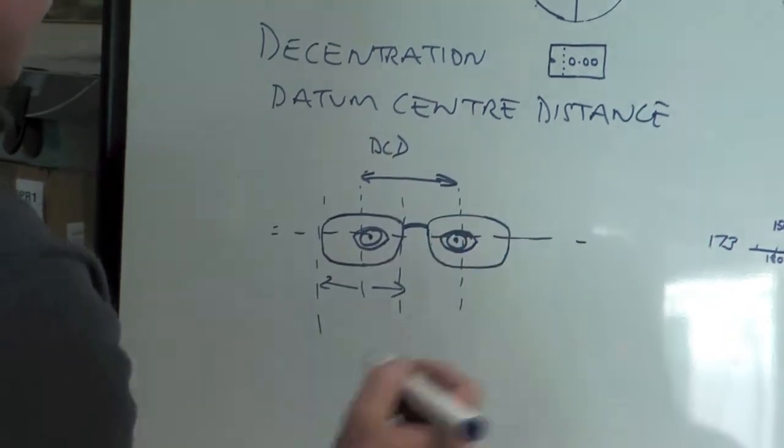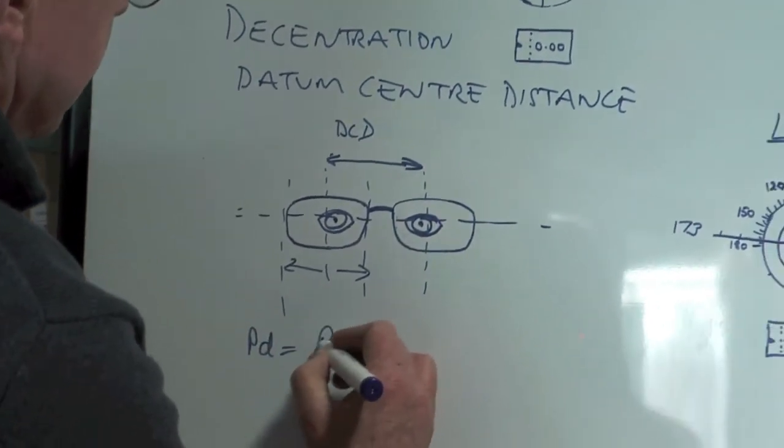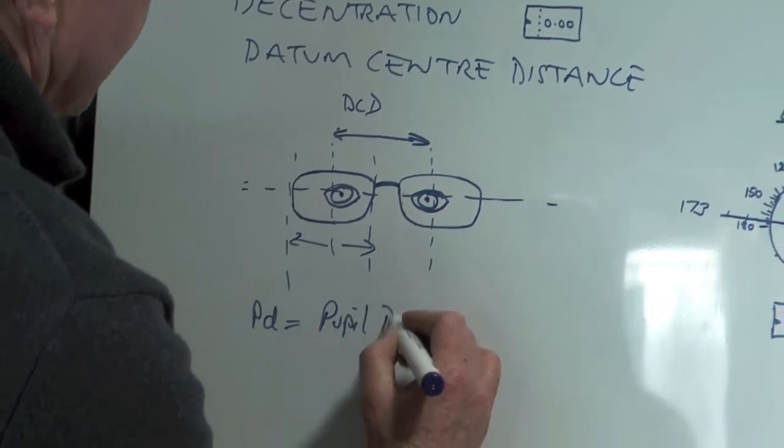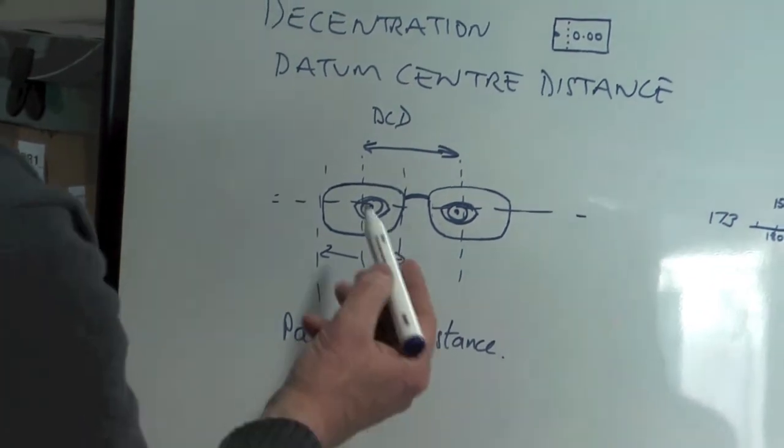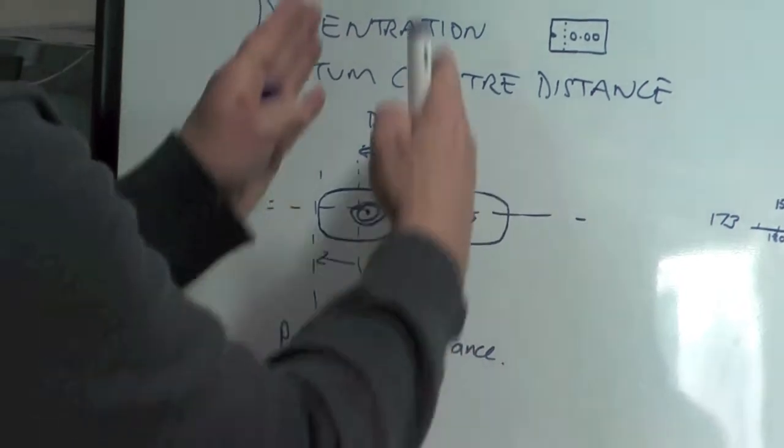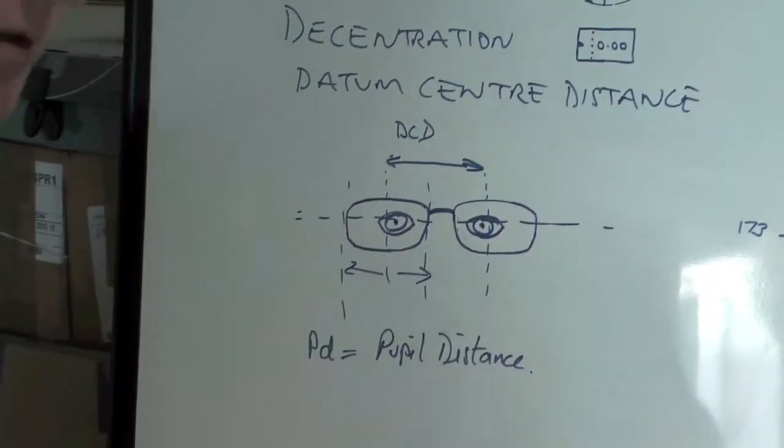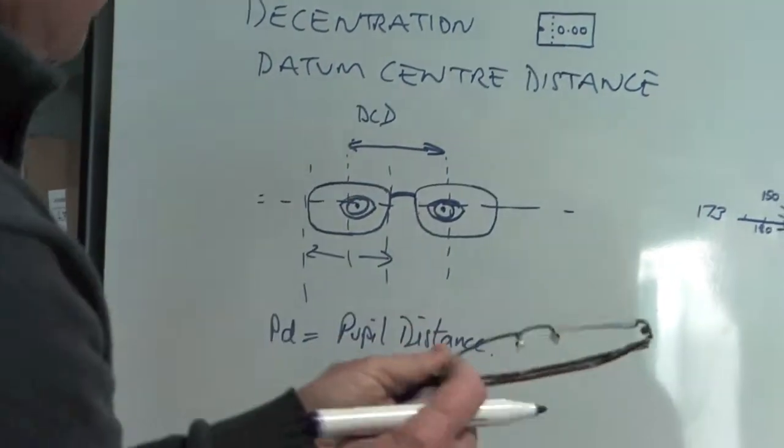Now the PD, we know what the PD is. It's the pupil distance will usually be different. Usually people are looking inside the DCD. So let's for example, we'll use this frame here with the one that we're actually making.